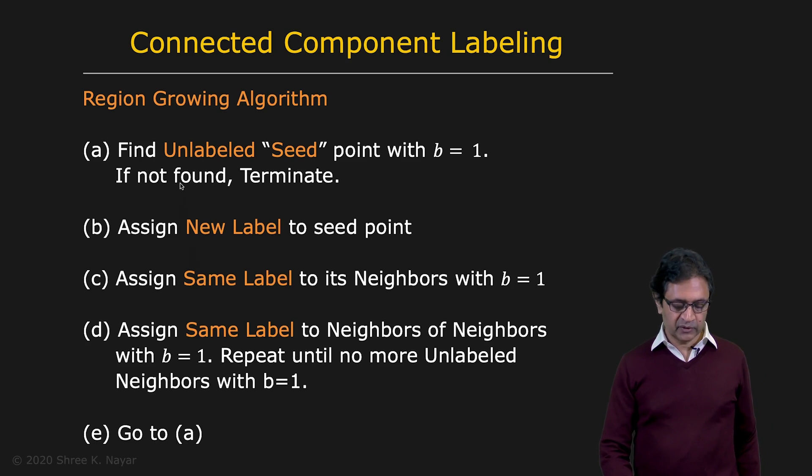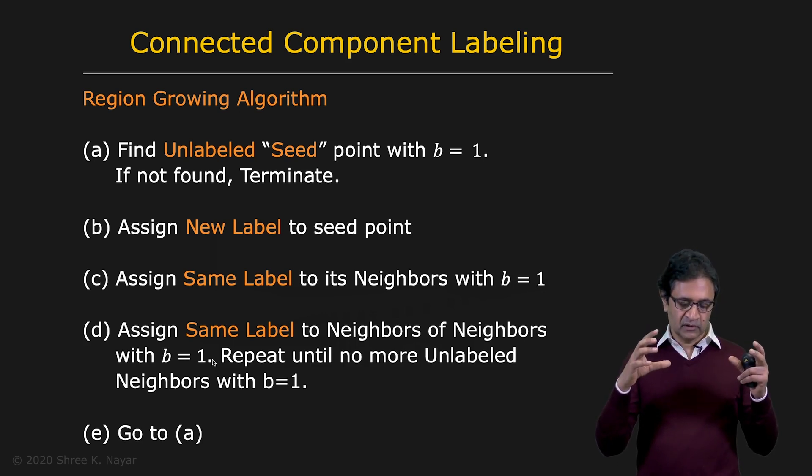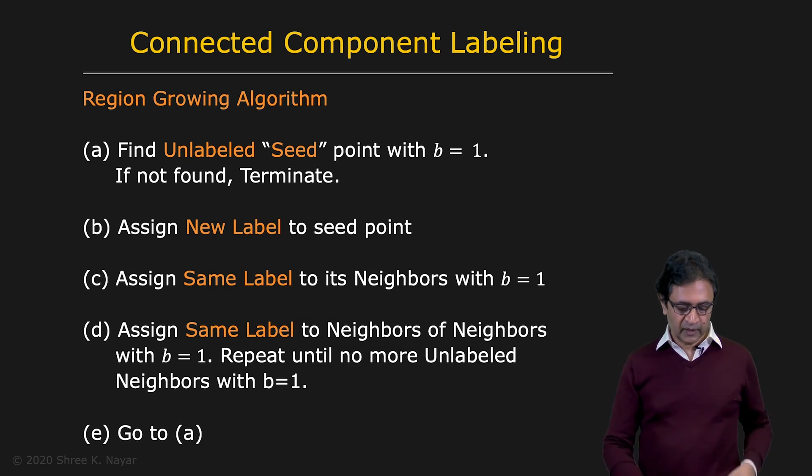So here's how it works. It's very simple. It's pure common sense. You start with, you find an unlabeled seed point. So you basically scan the image, and you find the first point which is not labeled. And it happens to be a 1, which means it's an object point. If you cannot find this point, you terminate. Once you find this point, you assign it a new label. If all previous points were assigned, the previous object was assigned the label 3, this one's going to be a 4, so it's a new label. And then you assign the same label to its neighbors that have B equal to 1. And then you assign the same label to the neighbors of the neighbors with B equal to 1. You keep repeating this. You're growing this object. You're growing this particular region. And you repeat this until there are no more unlabeled neighbors with B equal to 1.